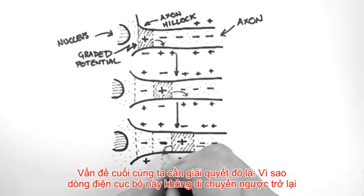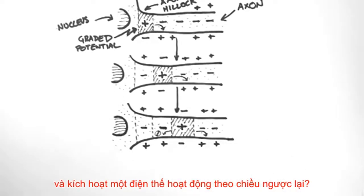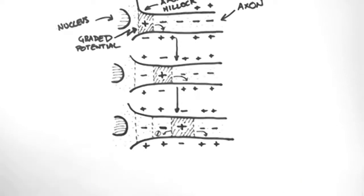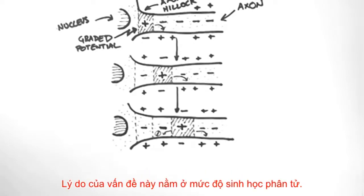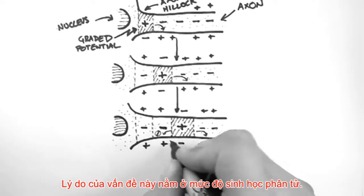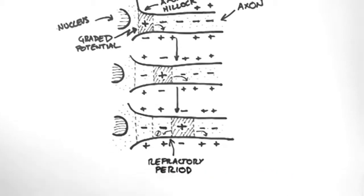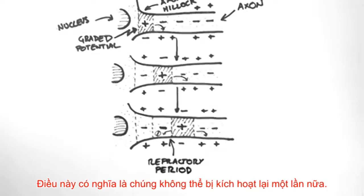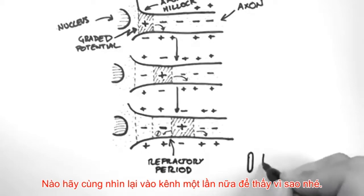So the last issue is to address why doesn't the local current flow backwards and trigger an action potential in the other direction? The answer is that it does flow backwards but it doesn't trigger an action potential. The reason for this is in the molecular biology. The voltage gated channels that are in the previous segments are in what we call a refractory period. This means that they can't be activated again. So we'll have a look at the channels again and see why this is.